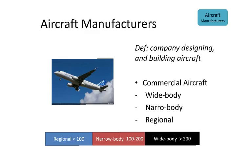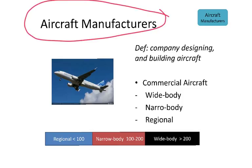Another stakeholder of the aviation industry are aircraft manufacturers — they are the ones designing and manufacturing the planes. If we look at commercial aircraft, we can divide it into three main groups: regional, narrow body, and wide body.